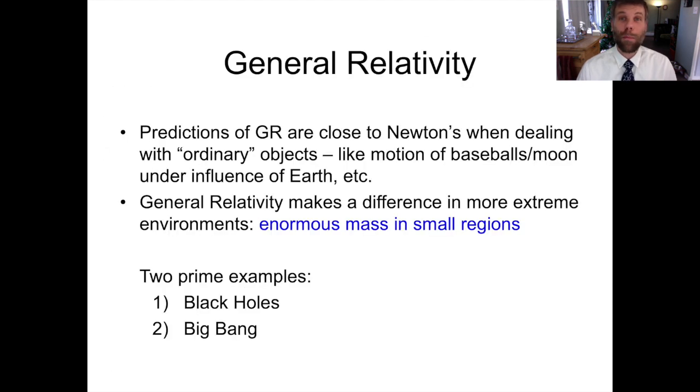General relativity makes a bunch of other really interesting predictions that can be relevant in different situations. For weak gravity, so for conditions like those that are typical in the solar system, the theory of general relativity reduces to the predictions given by Newton, which is nice. It's good that you can upgrade the theory without breaking all of the stuff that was working before. But once you start getting to very strong gravity, some weird things start to happen.